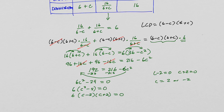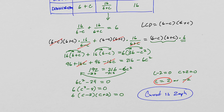The speed of the current must be positive, so C equals 2. The current is 2 miles per hour.